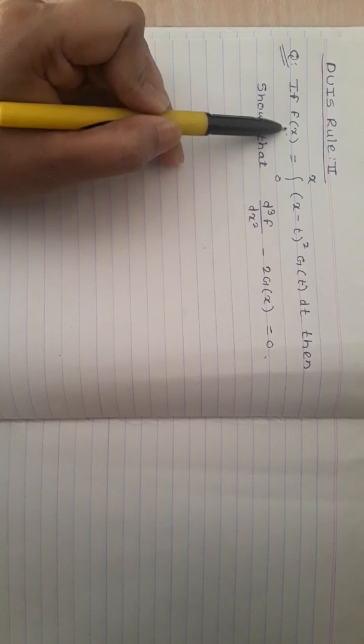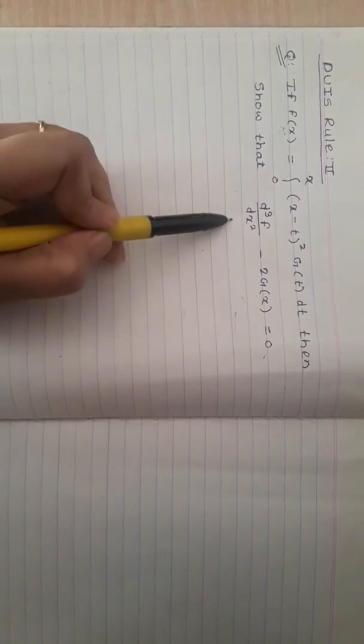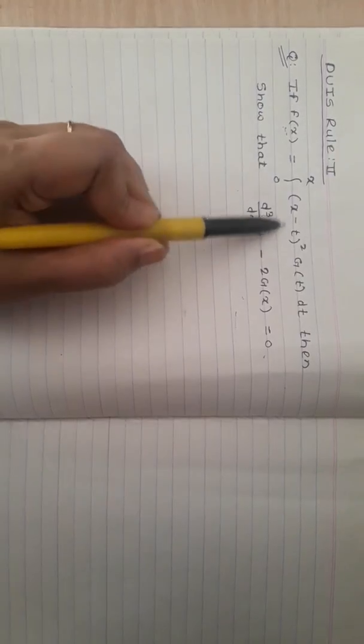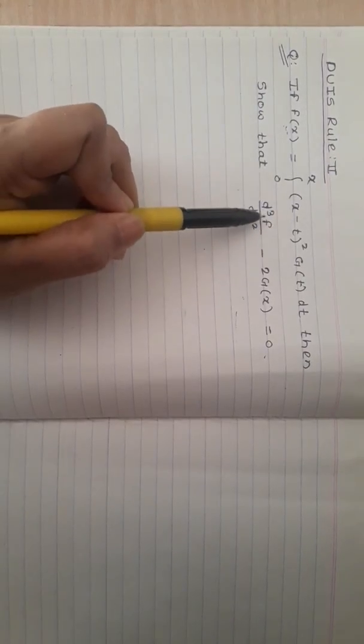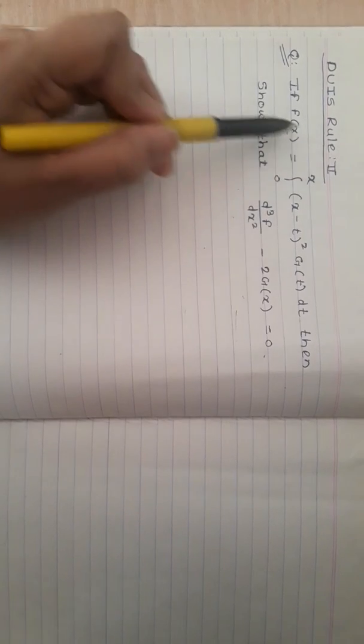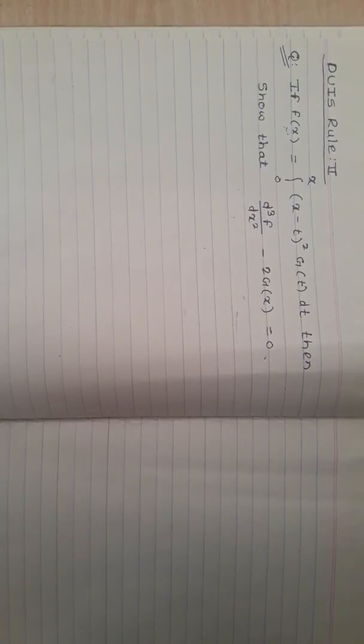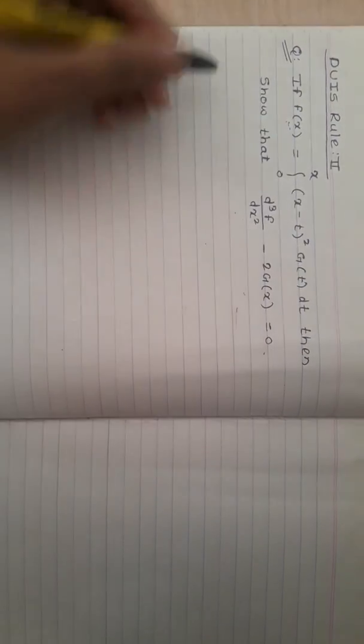The problem is: given f(x) in this form, we need to prove a differential equation. To do that, we will find the third-order derivative. Using Rule 2, we first find the first-order derivative, then apply Rule 2 again for the second-order, and once more for the third-order derivative.